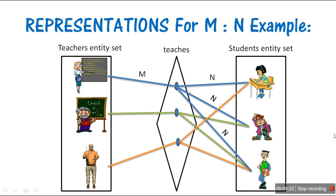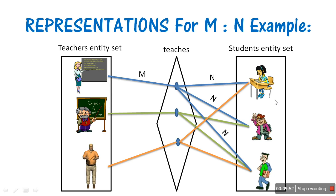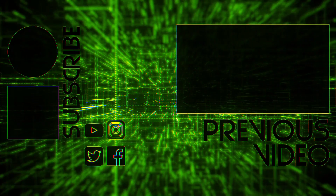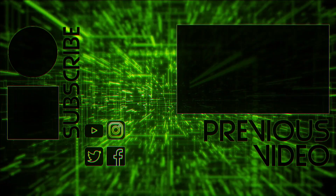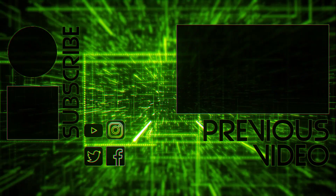We also looked at ER diagram representations: for one-to-one, arrows on both sides or the ratio written as 1:1; for one-to-many, arrow on the one side and no arrow on the N side, or write the ratio 1:N; for many-to-many, no arrows — just straight lines connecting both entities. That's cardinality ratio in DBMS. If you have any doubts or suggestions, please ask in the comment section below. Thank you for watching!